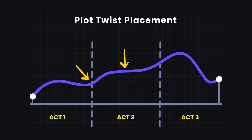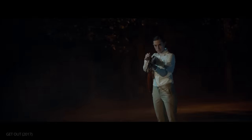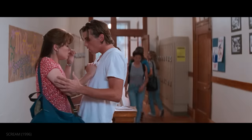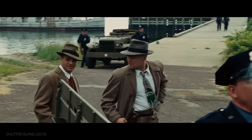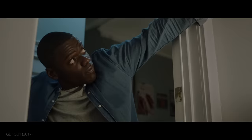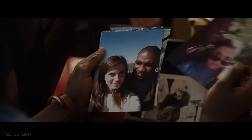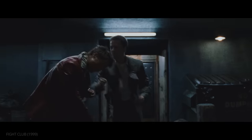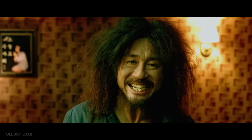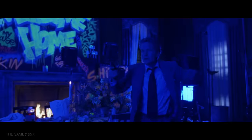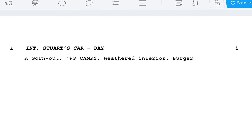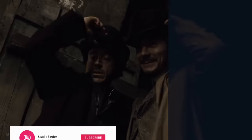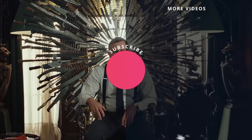Where a plot twist is placed has massive ramifications on the structure of a screenplay, affecting the story both before and after the reveal. To write a great plot twist: misdirect the audience but leave breadcrumbs so they don't feel cheated, and place the reveal strategically in the overall structure for maximum impact. When done well, a plot twist can deepen themes and create a story that rewards multiple viewings. It isn't for every script, but a shocking reveal is sure to get people talking. Start your script with StudioBinder's screenwriting software, and subscribe for more filmmaking videos.